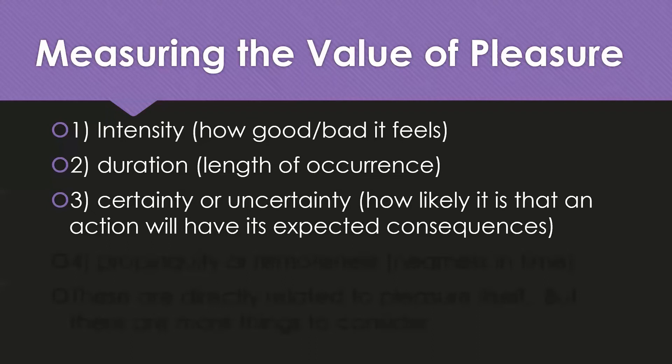Another thing to measure is the certainty or uncertainty that an action has to produce its expected consequences. For example, if you are extremely thirsty and get a cold glass of water, there is high certainty it will relieve your thirst and give you pleasure. But if you are considering a large purchase like a car or a house, your degree of certainty on whether it will give you the long-term pleasure you expect is lower — people have buyer's remorse, problems come up.